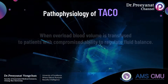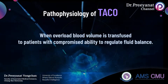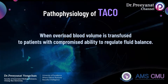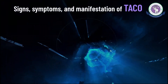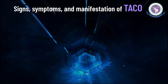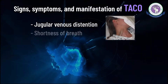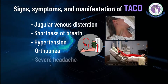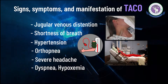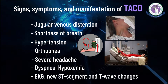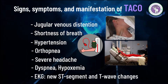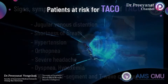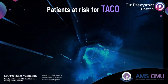Transfusion Associated Circulatory Overload occurs when an excess blood volume is transfused to patients with a compromised ability to regulate fluid balance.